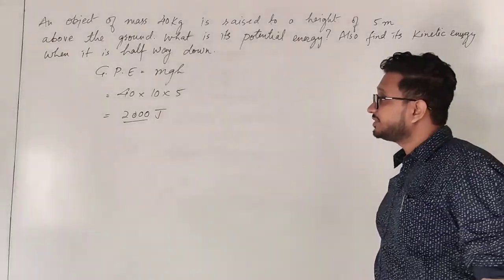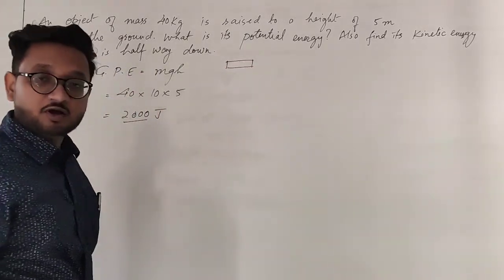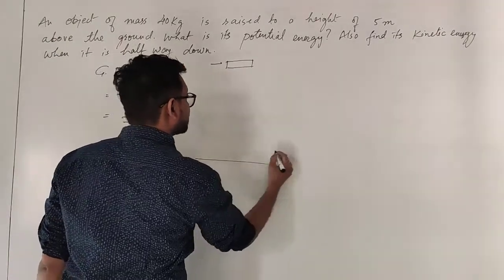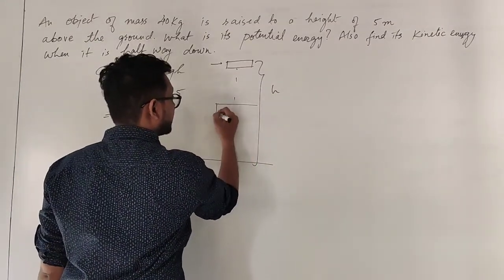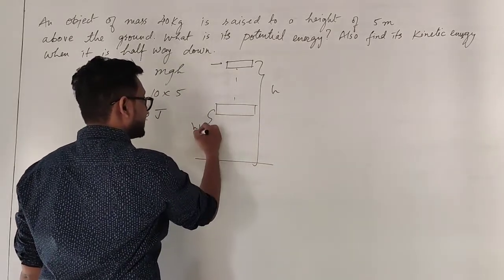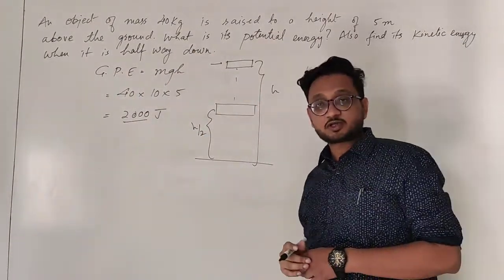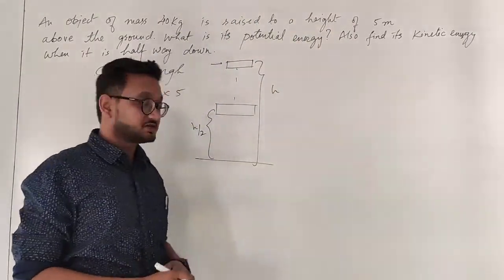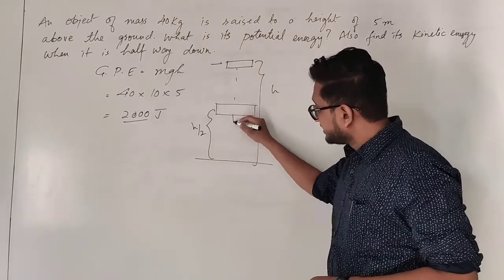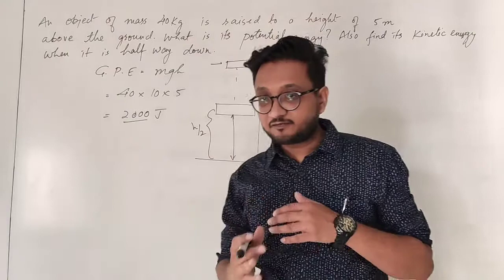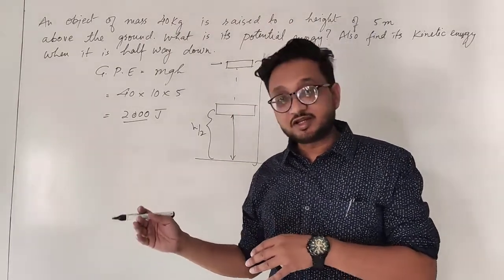The next part is: what will be its kinetic energy when it is halfway down? If you remember the derivation of the law of conservation of energy — we have the total energy above the ground for height h. When the object starts moving and is halfway down, the height is h/2. When the height is reduced, the gravitational potential energy is also reduced, and the energy which is reduced has been converted into kinetic energy.